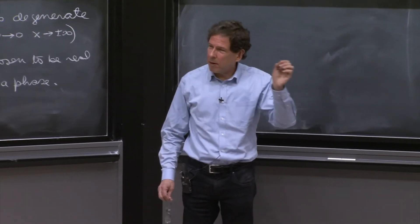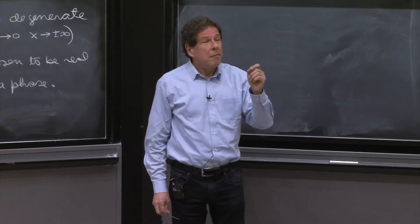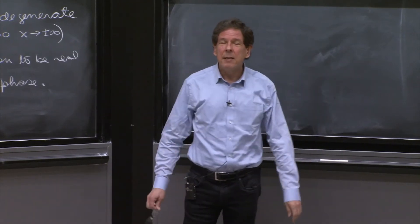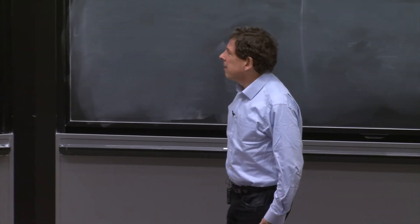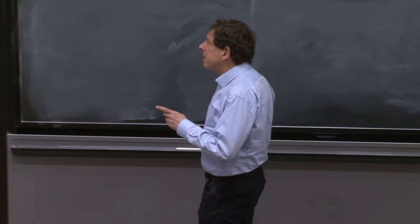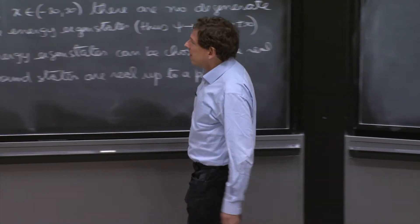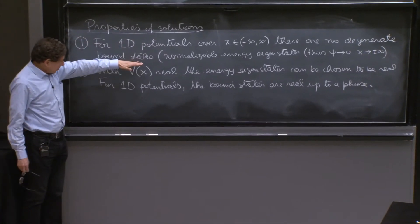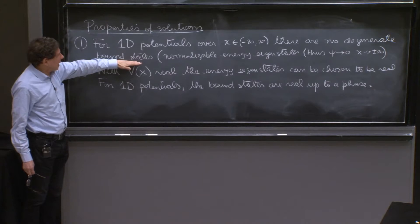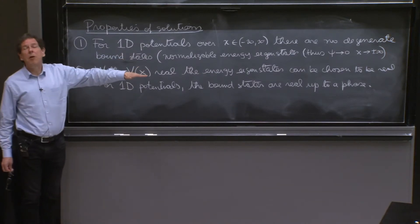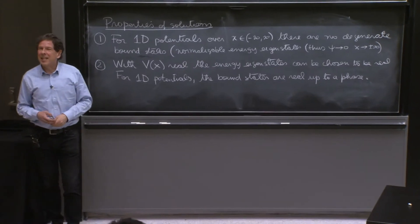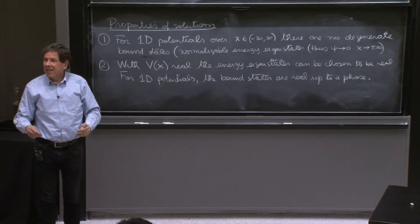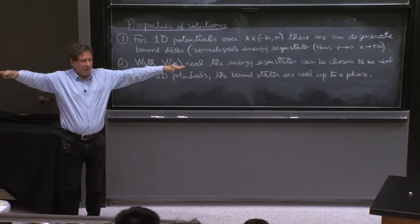You've seen already in the case of a particle in a circle there are degenerate energy eigenstates, but if the potential extends to infinity, there are no such things. Now, what is a bound state? A bound state sounds like a complicated concept, but it is not. It really means an energy eigenstate that can be normalized. If an energy eigenstate can be normalized and you live in the full real line, then the wave function must go to zero at infinity.